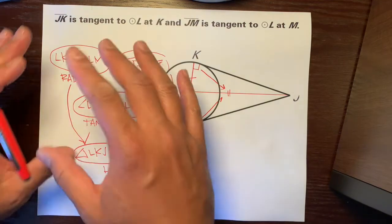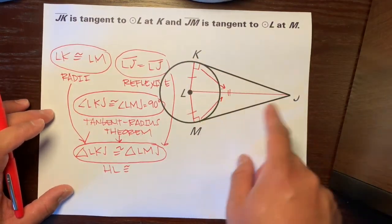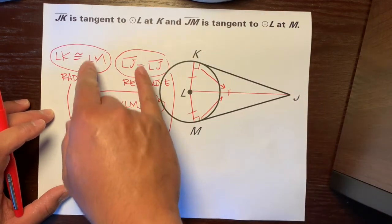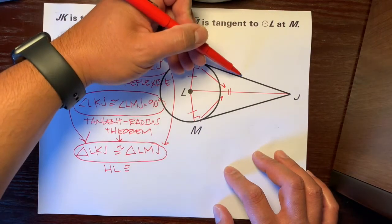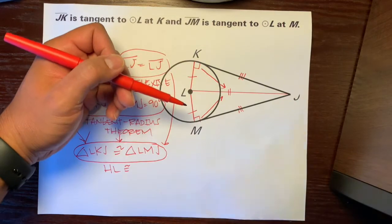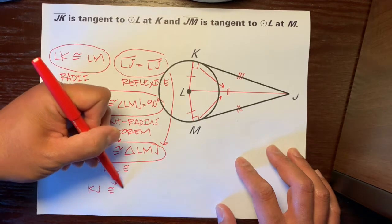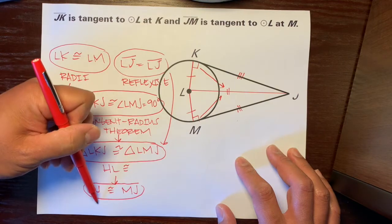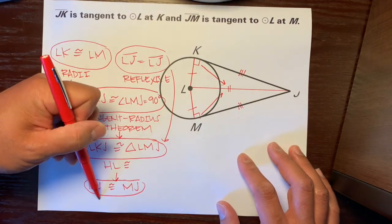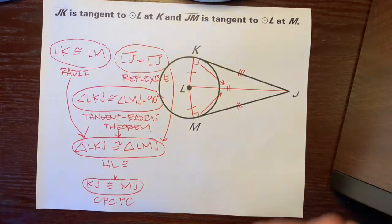And so, because of that, the whole reason for doing this is to come up with a conclusion about these two tangent lines. So, if these two triangles are congruent, as we've just shown, we can say that KJ is congruent to MJ. So, let's put that there. KJ is congruent to MJ because of, if you guys remember those five letters, corresponding parts of congruent triangles are congruent, or CPCTC.